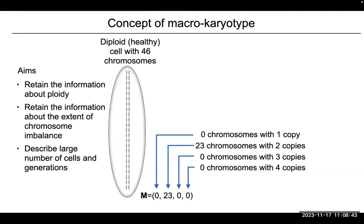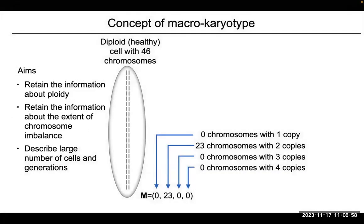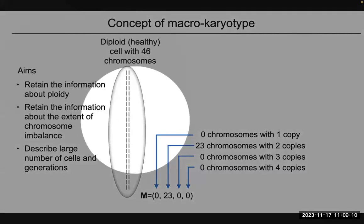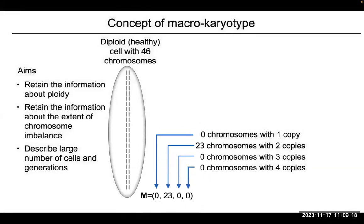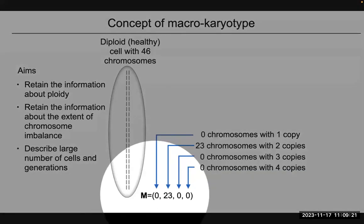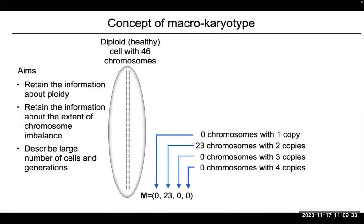The key novelty here is the so-called macrokaryotype concept. The aim is to recognize whether a cell is diploid or close to diploid, or whether it is highly aneuploid. If you see two copies of each chromosome 23 times, you can write this differently: zero chromosomes with one copy, 23 chromosomes with two copies, zero with three copies, and so on. What we call the macrokaryotype is this vector. The dimension reduces, but the approach is more compact.